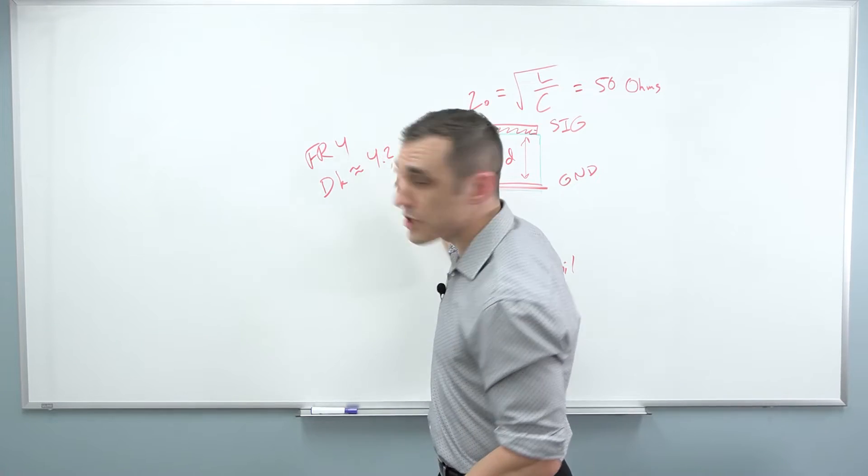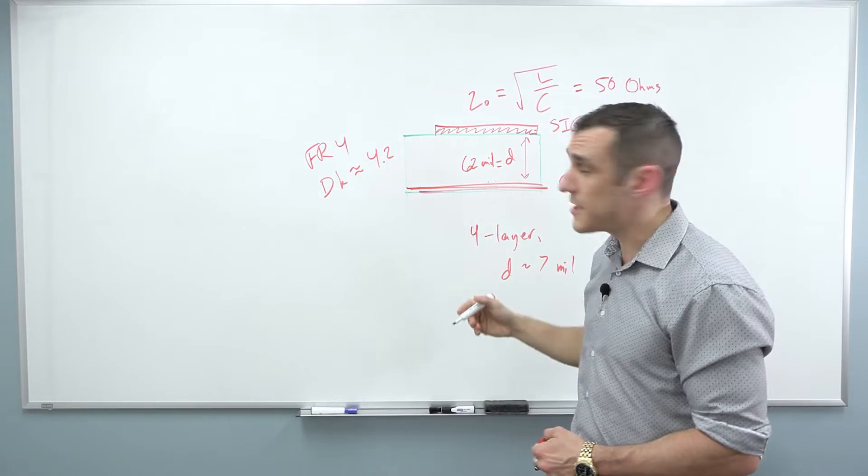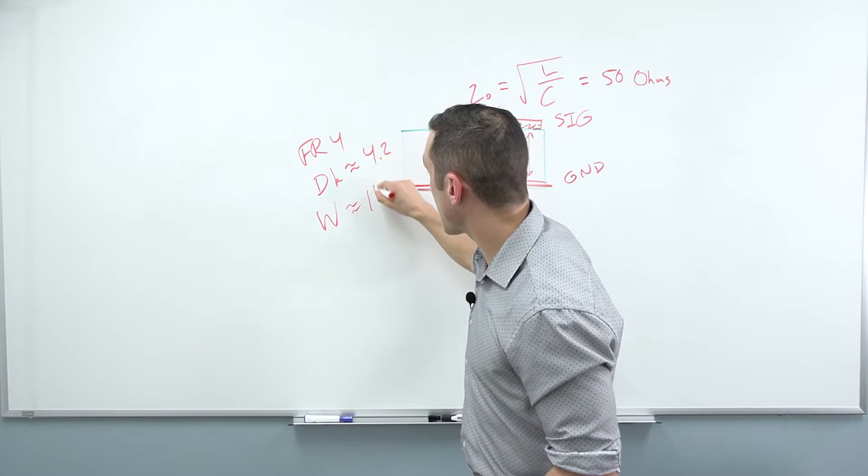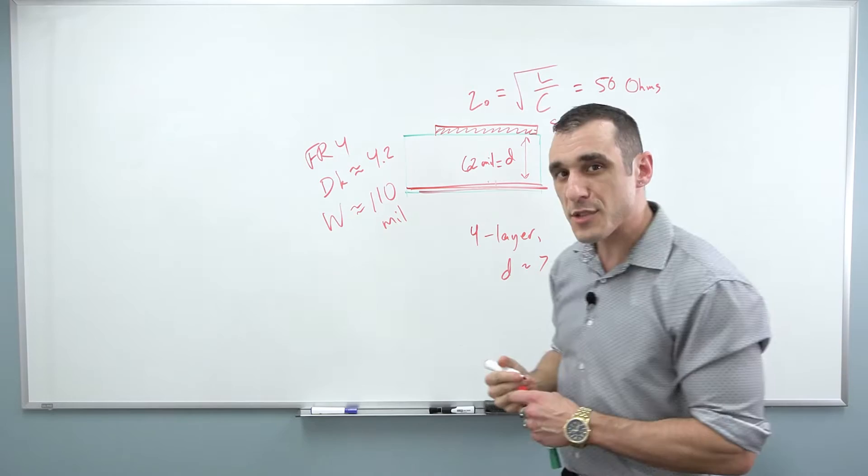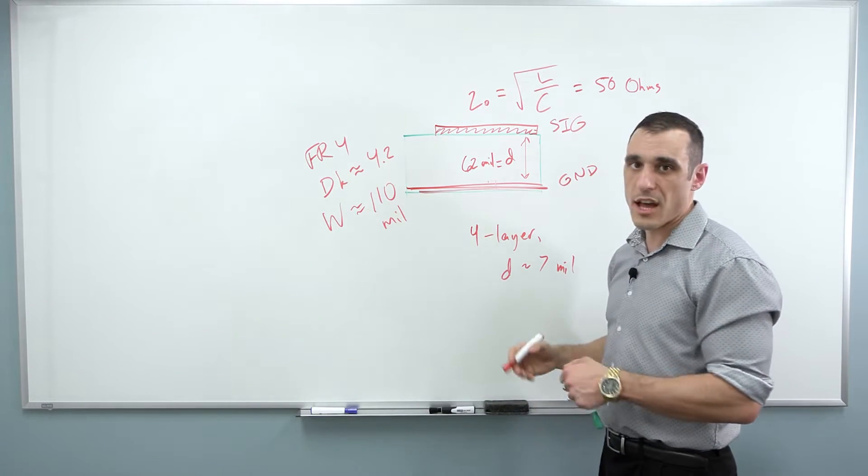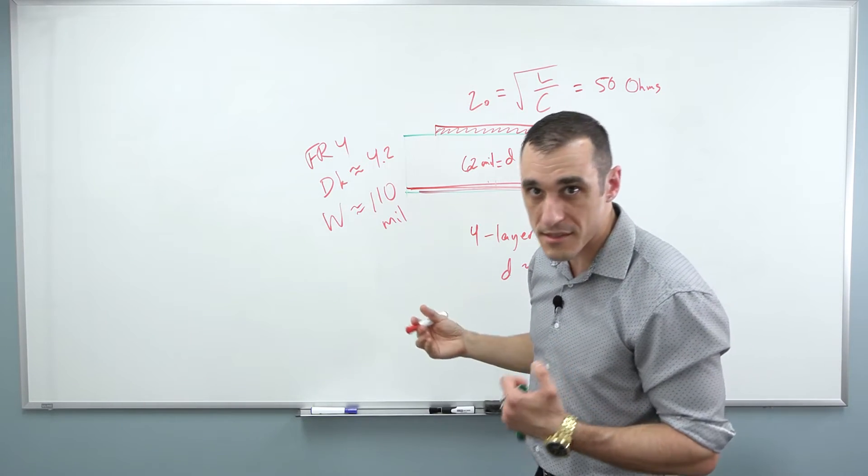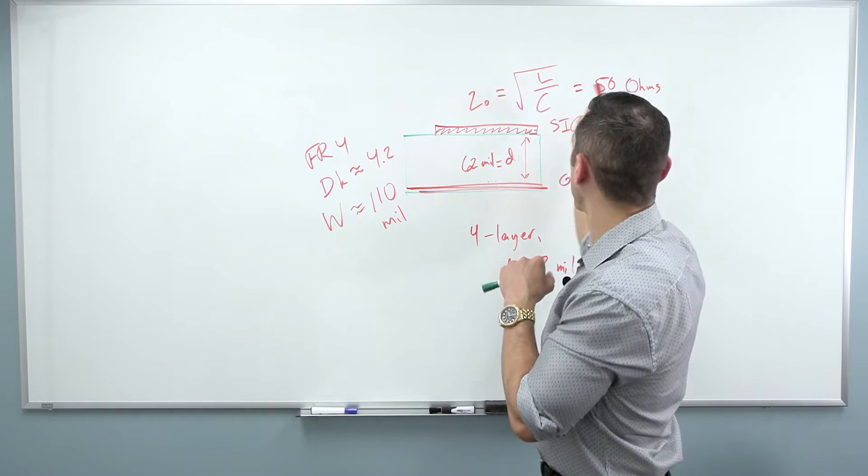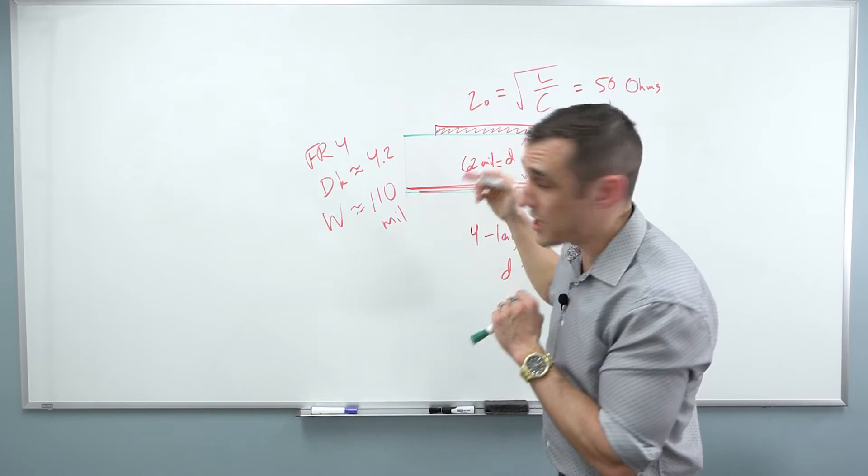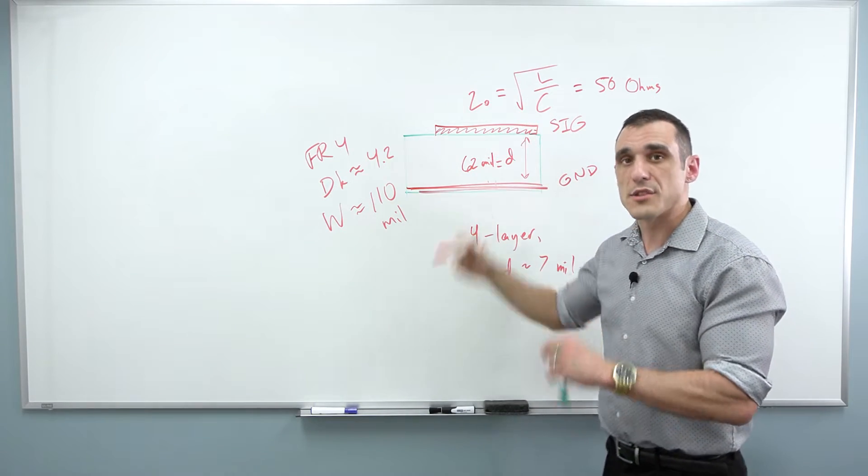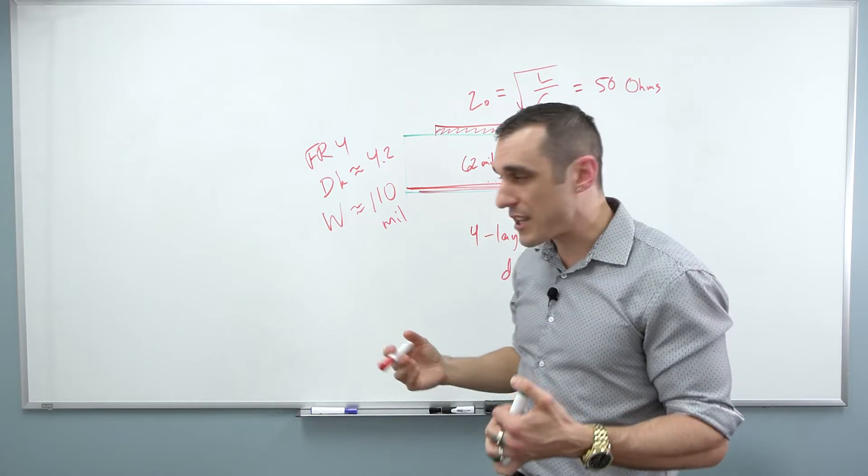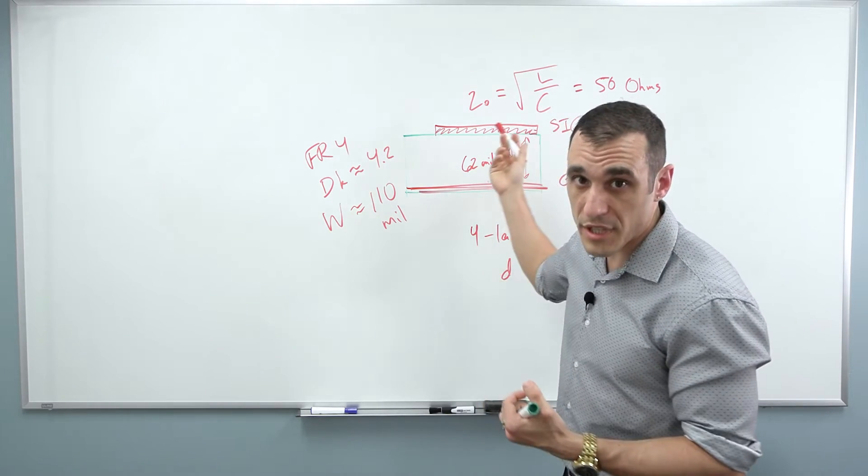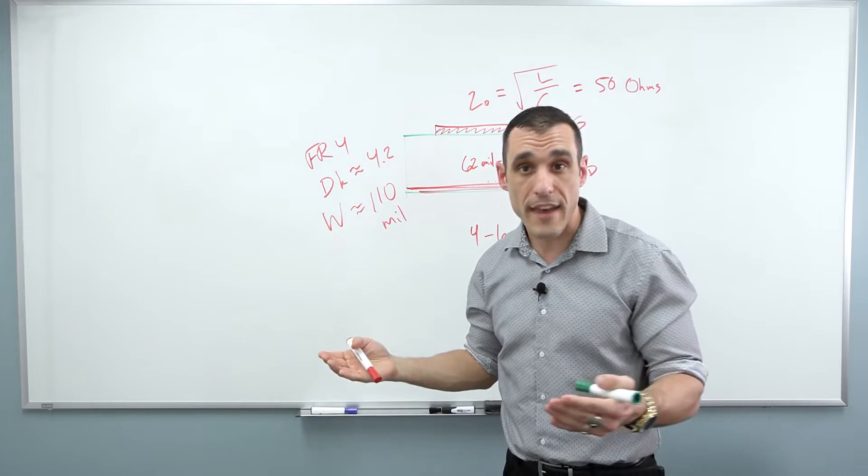the problem is that your width, W, is gonna be somewhere on the order of like 110 mils. That's pretty big. That's gonna be a lot bigger than the pitch on most pins. So you'd have to route with 110 mil traces for single-ended high-speed signals in order to hit your target impedance of 50 ohms. That's one of the challenges with routing high-speed signals on a two-layer board. It's really hard to hit your impedance targets without making really big fat traces.